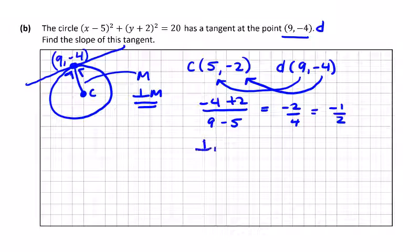So the perpendicular slope is equal to 2 over 1, which is equal to 2.